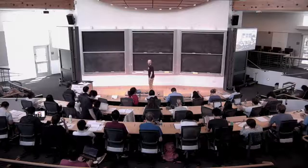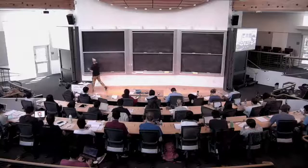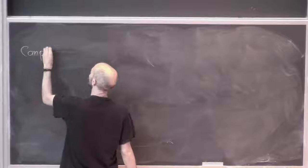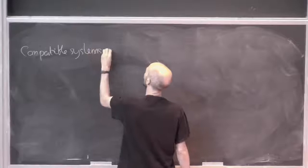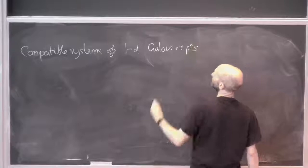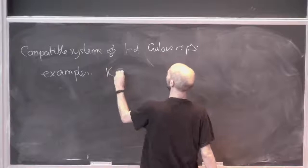Right, so we're going to prove the global Langlands conjectures for GL1 over a number field today, right now. This is kind of crazy. So here's the setup: what do we know? Compatible systems of one-dimensional Galois representations.